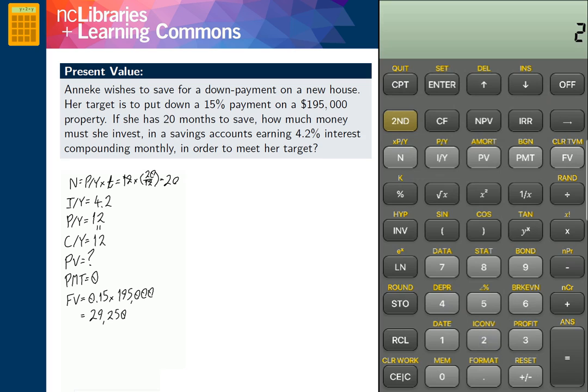We enter 20, our value for capital N, and press the capital N button to save the value. We enter our interest rate, 4.2 per annum, and we press the I over Y button.